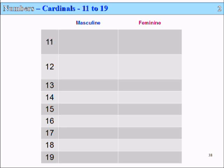When we get to 11 to 19, we simply add the word for 10 to the word for 1, for example, and we make the word 11.